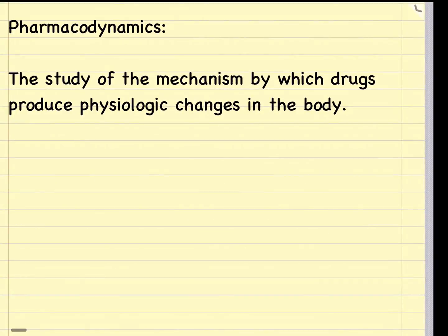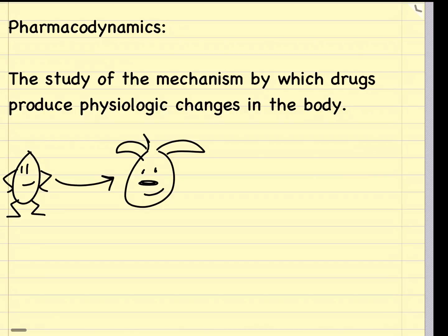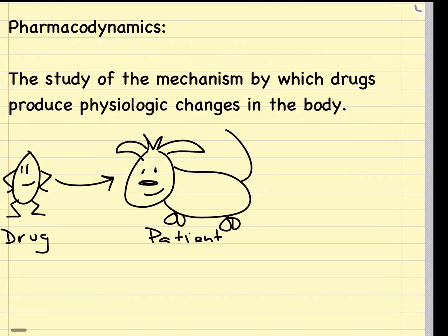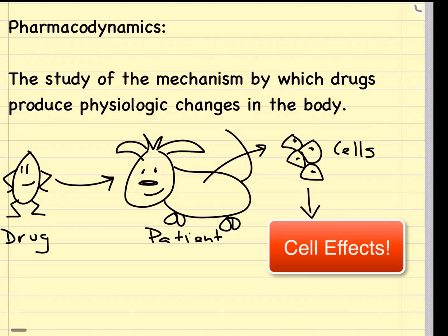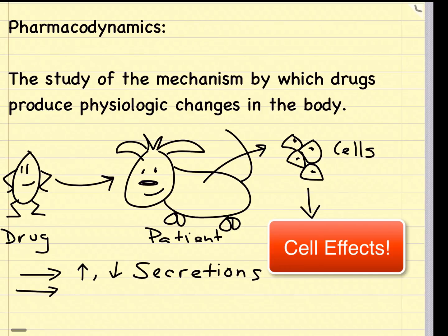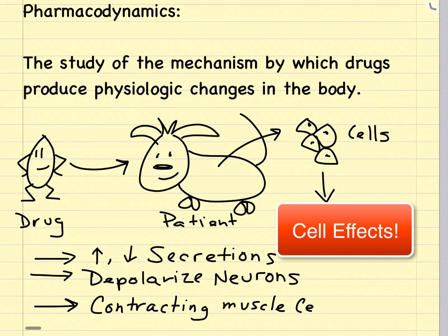Pharmacodynamics is the study of the mechanism by which drugs produce physiologic changes in the body. Drugs can affect the activity of a cell or a tissue by combining with cellular receptors on the cell membrane in order to change the cell's function. When drugs combine with receptors, they can increase or decrease cell activity — for example, increasing or decreasing cell secretion, depolarizing neurons, or increasing muscle cell contractions.